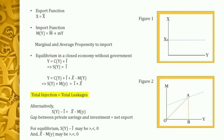Figure one shows the export function as a horizontal line parallel to the income axis, showing that exports are exogenously given at the level X₀ and remain unchanged at that level no matter how much the national income changes.